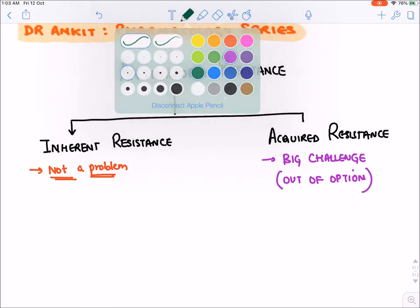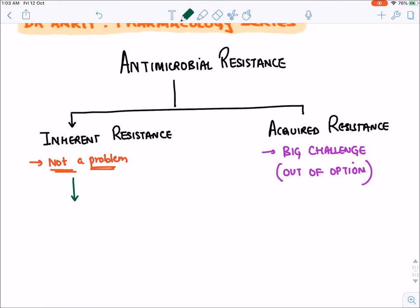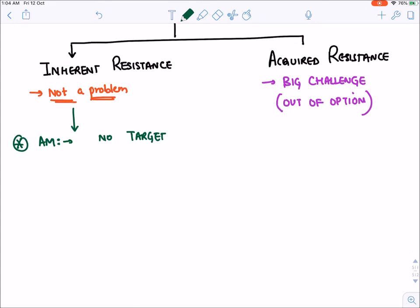Let's talk about inherent resistance first. Why is a bacteria inherently resistant to an antimicrobial? The classical reason is that the antimicrobial does not have a target in that bacteria — there is no target through which that antimicrobial can kill the bacteria. Let's take examples of inherent resistance.